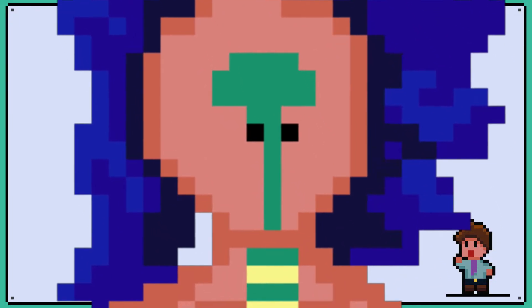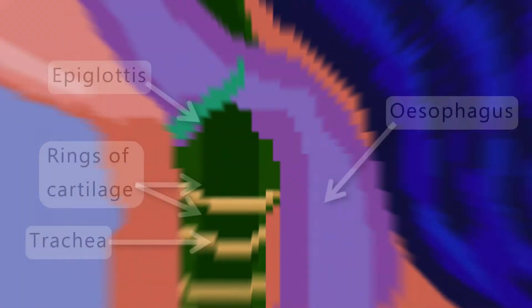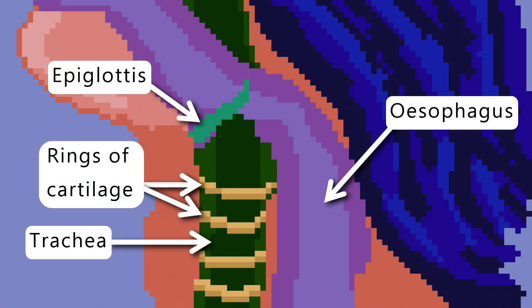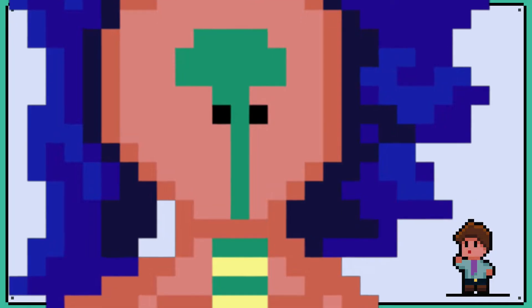Then the air travels down the trachea, which is in front of the oesophagus. Remember, you have two tubes, and I'm sure you've experienced food going down the wrong pipe and you start coughing. The trachea also has rings of cartilage to keep the structure open but flexible.